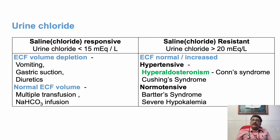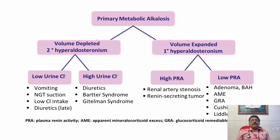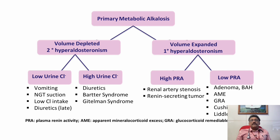For saline-resistant conditions like hyperaldosteronism, we cannot treat with normal saline; we need a different strategy—such as potassium-sparing diuretics, control of aldosterone levels, or surgery. Other conditions include Gitelman syndrome, high plasma renin activity from renal artery stenosis or renin-secreting tumors, low plasma renin activity with high aldosterone from an adenoma (Conn syndrome), and Cushing syndrome. Liddle syndrome and Gitelman syndrome are less common.